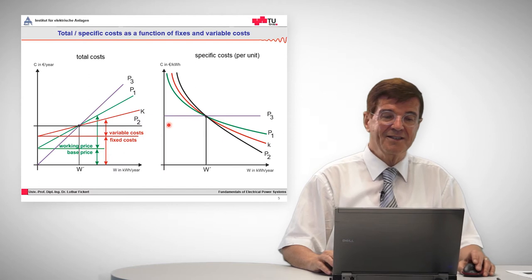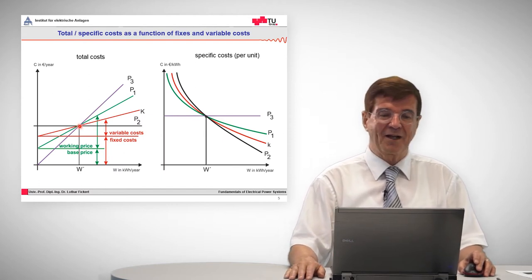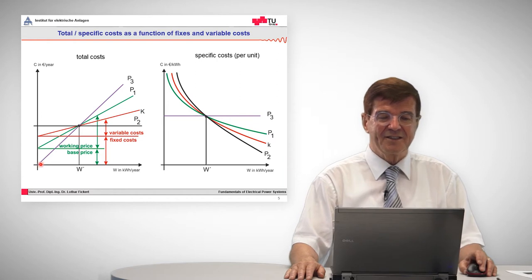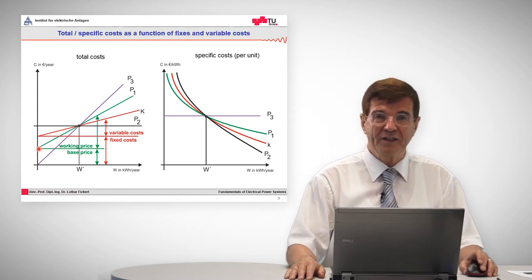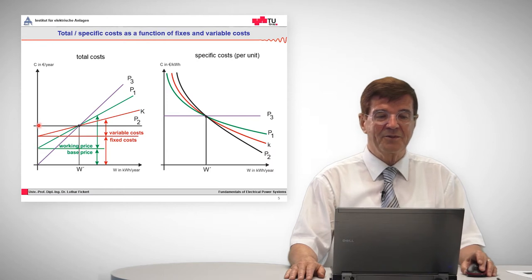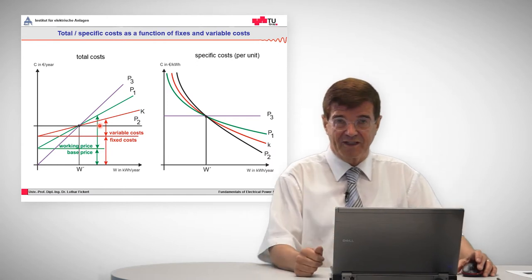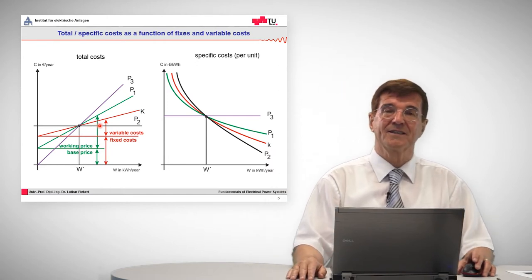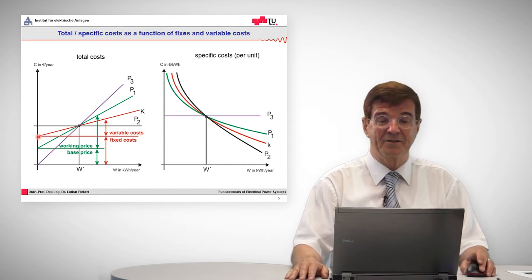So there are different plants. This is just a principle representation. There are different types of plants. For example, there is no plant where you have no fixed cost, but you have plants with low fixed costs and high working prices. So for example, these are gas-fired power plants. Then we have power plants where you have high fixed costs, but virtually no variable costs, like photovoltaic power plants, like wind power plants. And the biomass is somewhere in between.